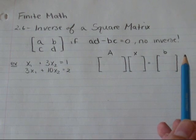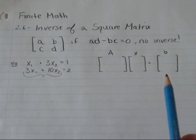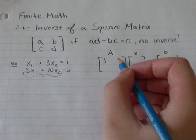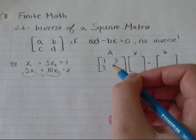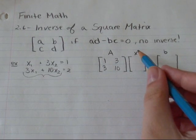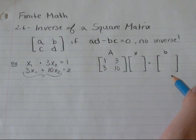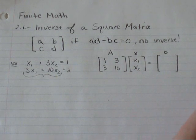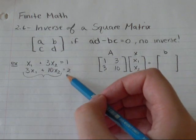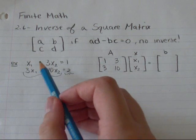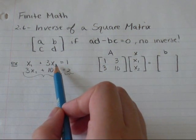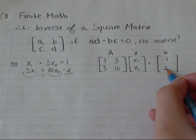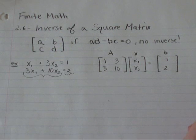So my A is... I'm going to write these terms as a matrix. So this will be my x1 column, this will be my x2 column. So I've got 1x1 and 3x2, and then on the bottom I've got 3x1 and 10x2. My x, it can be just whatever variables you're using. But here I've got x1 and x2, so I'm putting x1 on the top, x2 on the bottom. And b is whatever the numbers are over here. So the first is 1, and then on the bottom I've got 2.